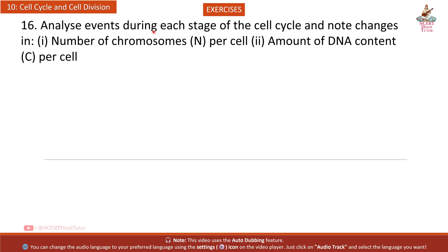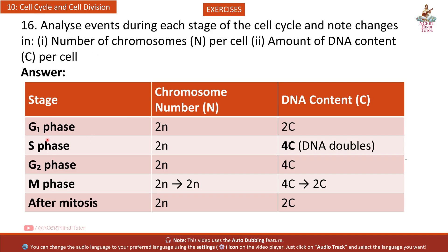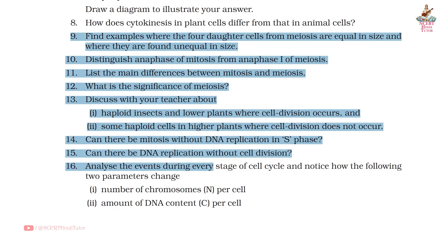Question 16: Analyze changes in chromosome number (N) and DNA content (C) per cell at each stage. G1 phase: 2N chromosomes, 2C DNA. S phase: 2N chromosomes, DNA content doubles to 4C. G2 phase: 2N chromosomes, 4C DNA. M phase: chromosomes go from 2N to 2N; DNA content from 4C to 2C. After mitosis: 2N chromosomes, 2C DNA.